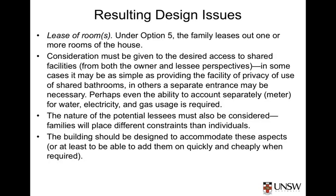Lease of rooms. Under option 5, the family leases out one or more rooms of the house. In this case, consideration must be given to the desired access to shared facilities from both the owner and the tenant's perspective. In some cases, it may be as simple as providing privacy of use of shared bathrooms. In others, a separate entrance may be necessary, and perhaps even the ability to account separately for water, electricity, and gas usage. The nature of the potential lessees must also be considered, as families will place different constraints than individuals will. The building should be designed to accommodate these aspects, or at least to be able to add them on quickly and cheaply when required.